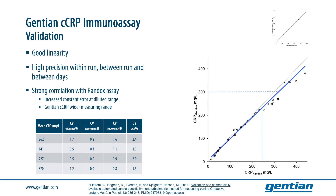While above the dilution range — indicated by the lines in this graph — the constant error increased slightly. It is important to note that the Gentian canine CRP assay has a wider measuring range, resulting in less risk for a potential constant error due to dilution, and the wider range also reduces the workload.